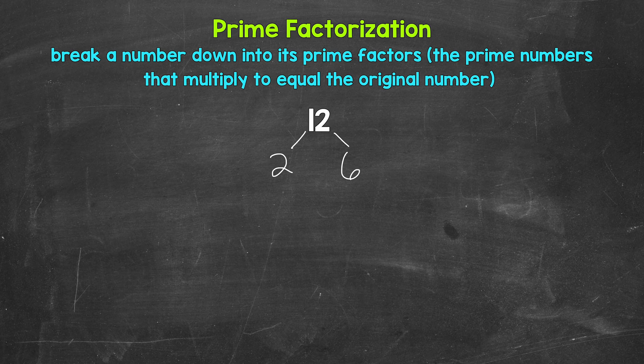Now let's continue to break this down. So we have 2 and 6. Now 2 is a prime number, so we are done here. We can't break that down any further. So let's circle 2 to show that we have a prime number. 6, on the other hand, is a composite number, so we can break 6 down.